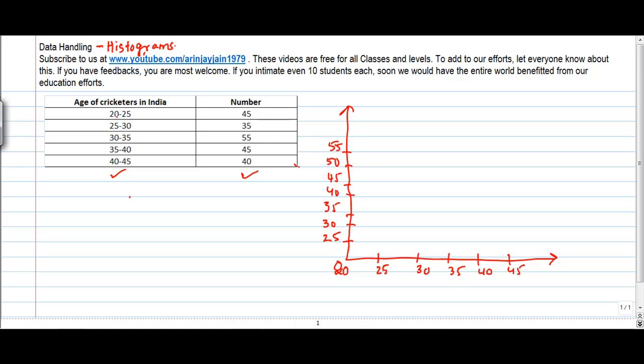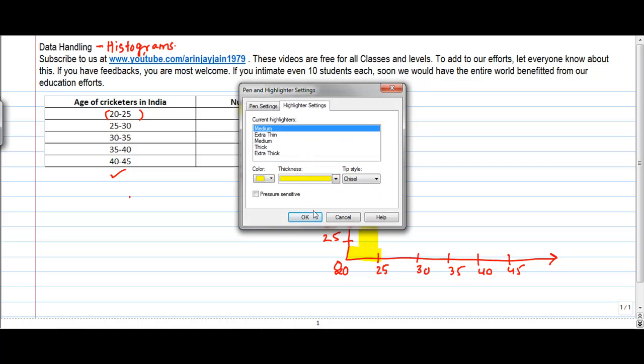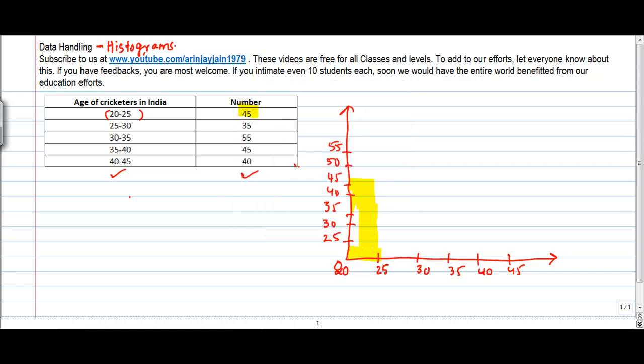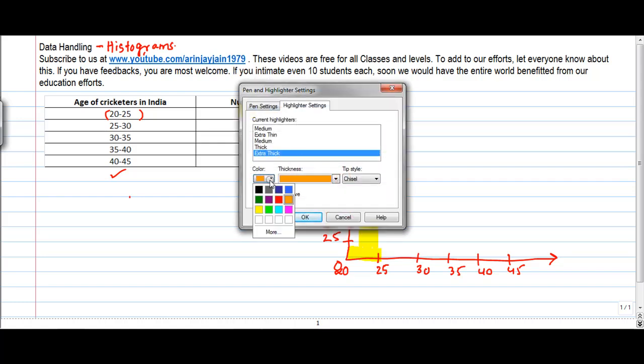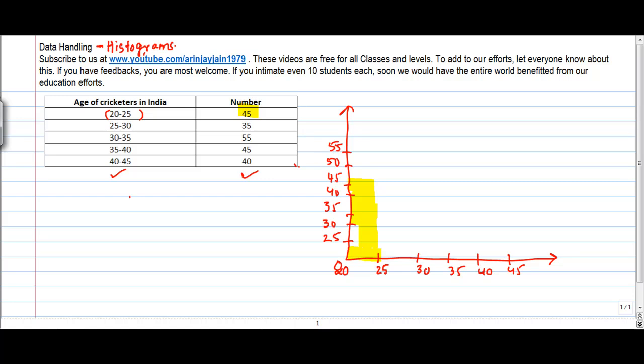Okay so now what is the interval? 20 to 25 which covers basically let me use this portion and what's the frequency? The frequency here is 45 which is here. So this is what I have in terms of the first histogram.